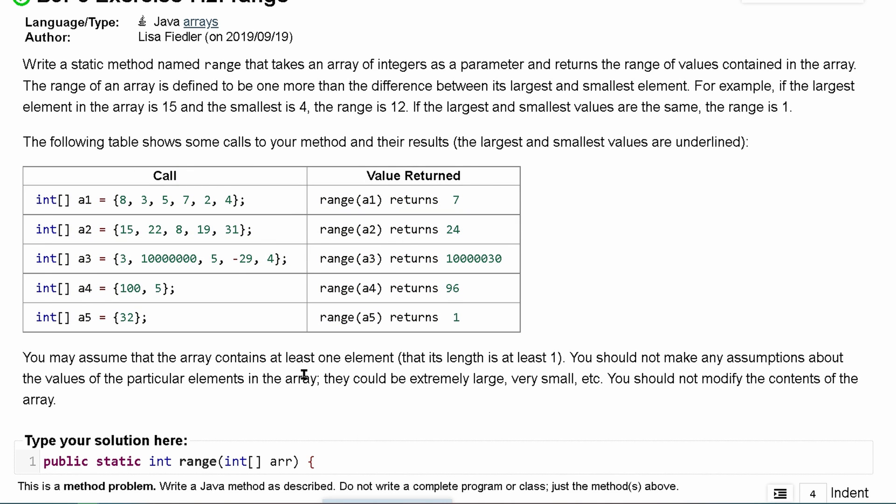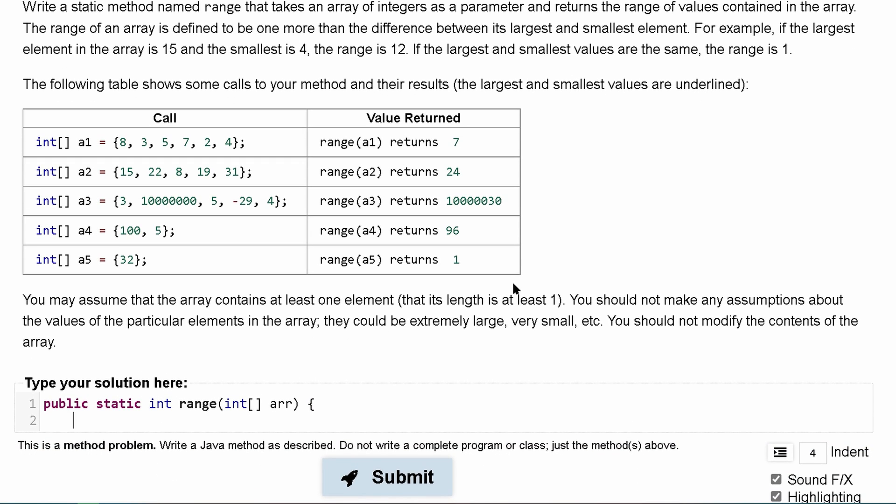We can assume that the array contains at least one element, that's nice, and we should not make assumptions about particular elements because we'll code for all of it. So we're assuming the length is at least one.